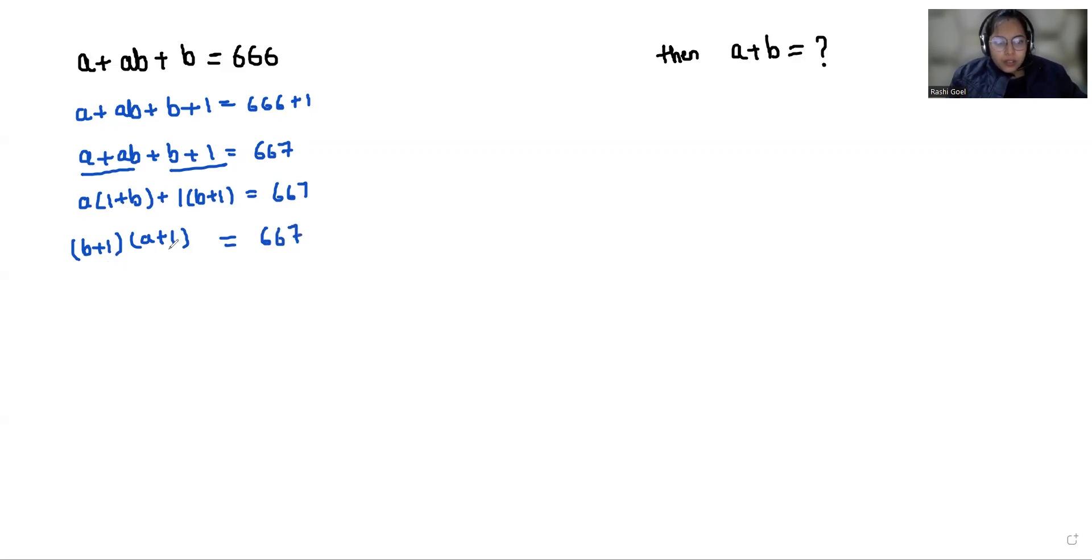Now we have two roots that give us 667 so we can write the multiples of 667. Here A and B both belong to positive integers. So our first factor is 667 multiply 1 or 1 multiply 667, and 23 multiply 29 or 29 multiply 23.